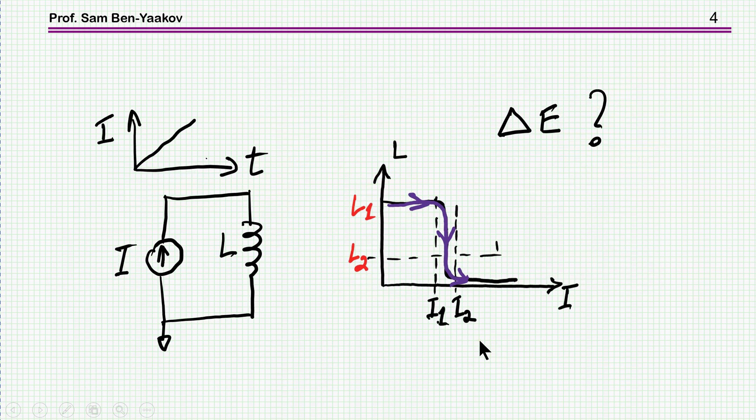So, the question was as follows. Suppose we have a current source feeding an inductor. We move here on this curve as the current goes up on this flat portion, and then there is a sharp drop. Then we go to this region here, and as we have said, there seems to be a difference in energy. Actually, the energy seemed to be dropping here, and the question was, where does this energy go? There is a conservation of energy.